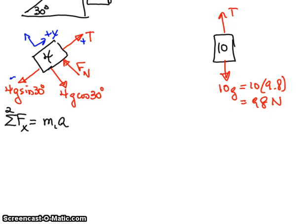And we're going to write T minus 4G times the sine of 30 degrees is equal to m1a. Now, m1 we know is 4, so I'll write 4a there.